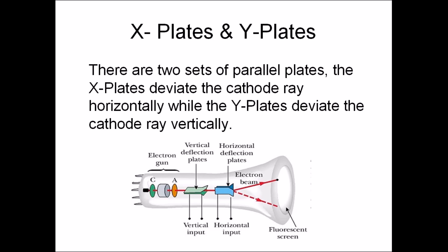The cathode rays go to the Y plates and the X plates. Y plates change the direction of cathode rays vertically and X plates change the direction of the cathode rays horizontally. This allows the focusing of the cathode rays and this is a principle that old non-flat screen TVs worked on.